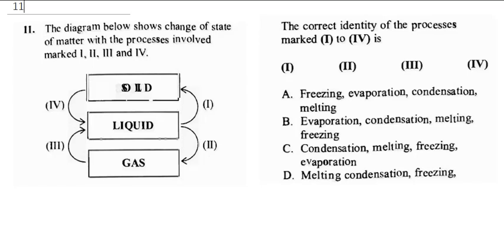The diagram below shows change of state of matter with the processes involved marked I to IV. When you have a liquid going to solid — when you have water becoming ice — it's called freezing. So this process is called freezing.